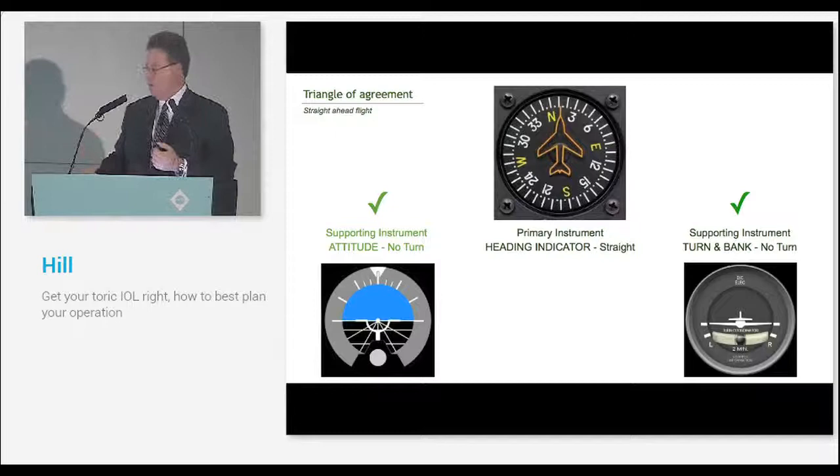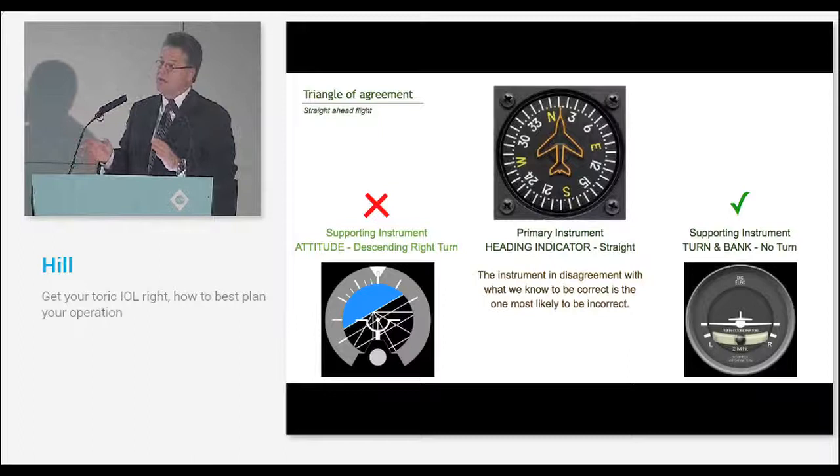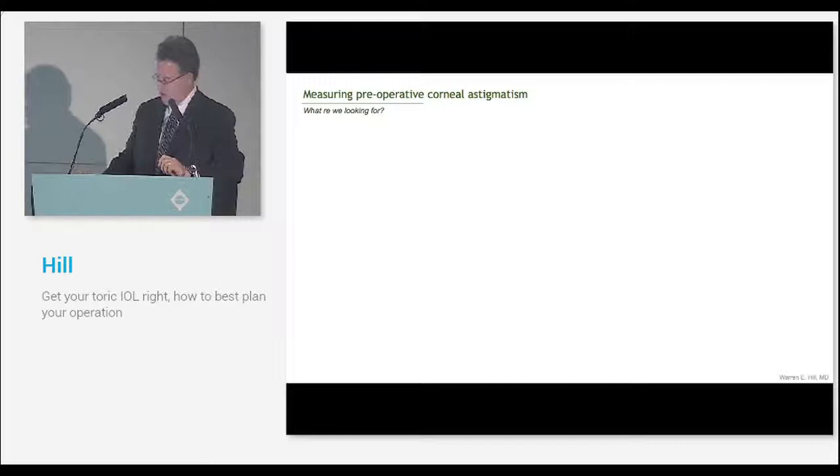If all three of these instruments agree, we know where everything's correct. But if one of these instruments fails and the other two agree, it's probably the instrument that disagrees with the other two that is incorrect. Using this philosophy borrowed from the commercial aviation world, we can figure out some ways to measure the eye for the toric IOL.